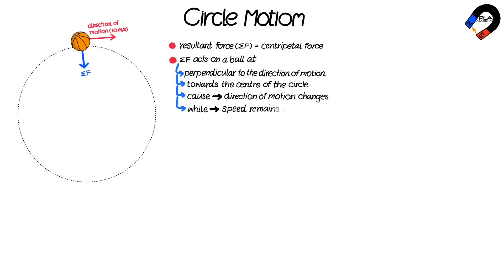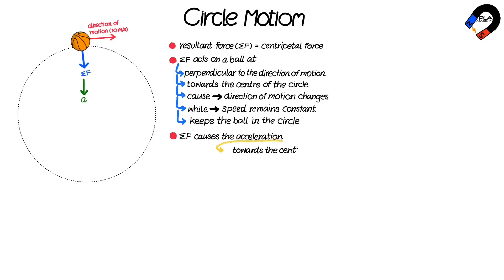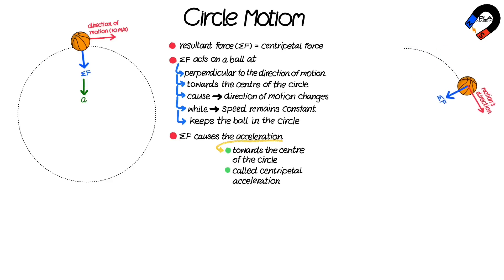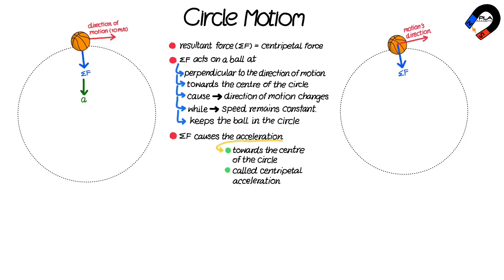The speed remains constant, which keeps the ball in the circle. This resultant force causes an acceleration directed towards the center of the circle. This acceleration is called the centripetal acceleration. The ball will escape from the circular path along the tangent line at the point of escape, as shown on the screen.